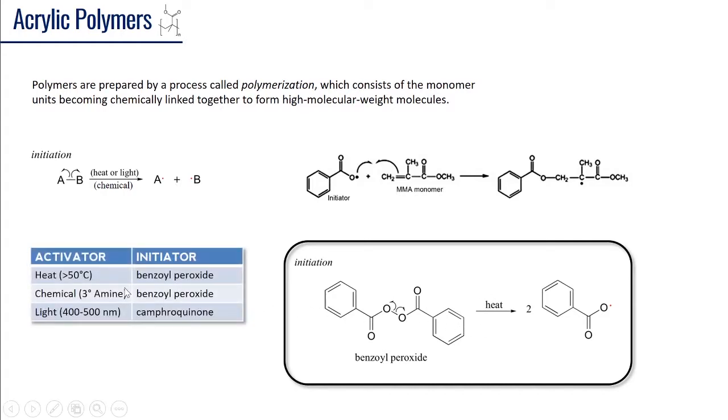One method in which this happens is via heat. If we heat this benzoyl peroxide above 50 degrees centigrade, this will cleave here forming a free radical.